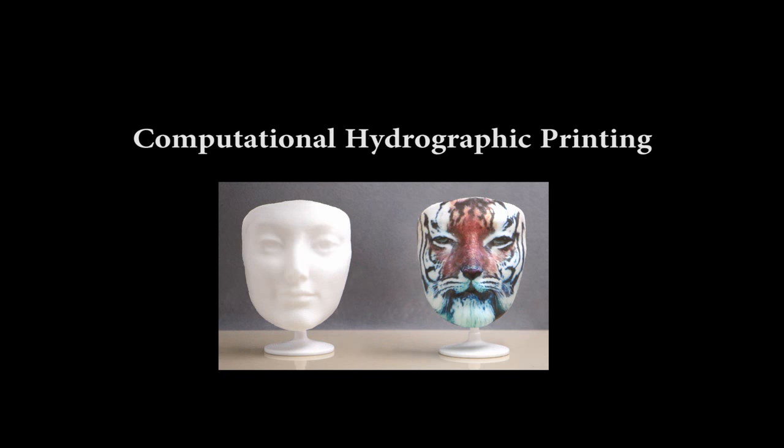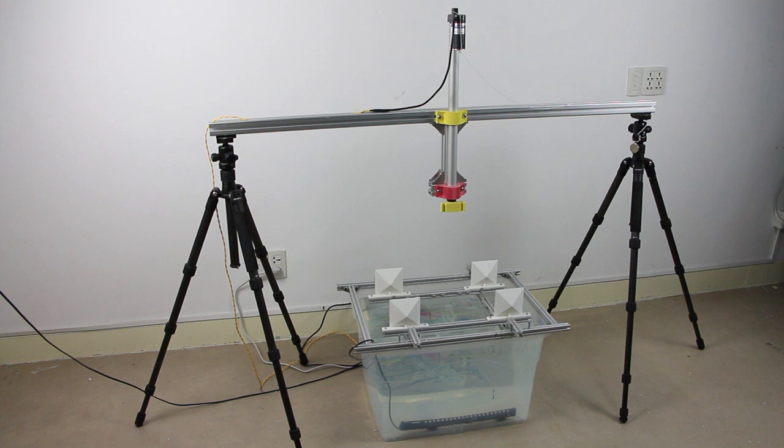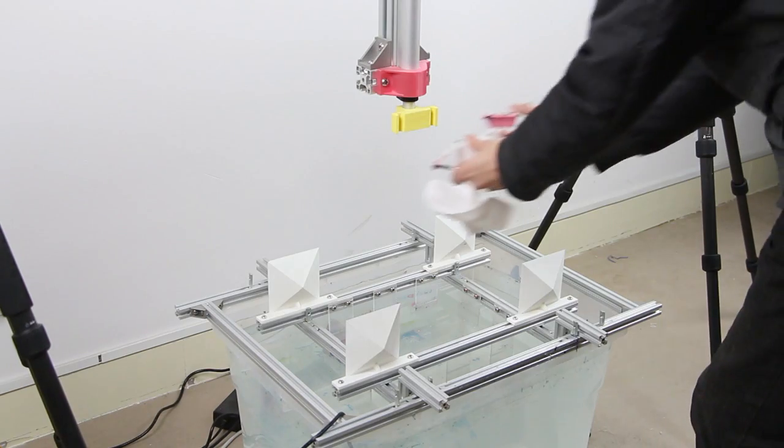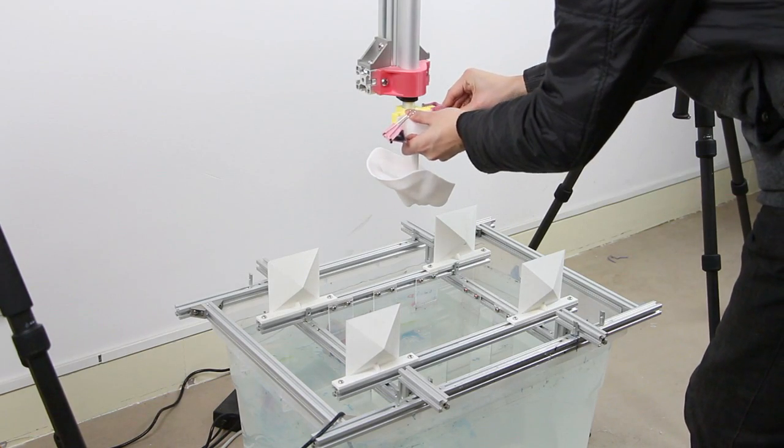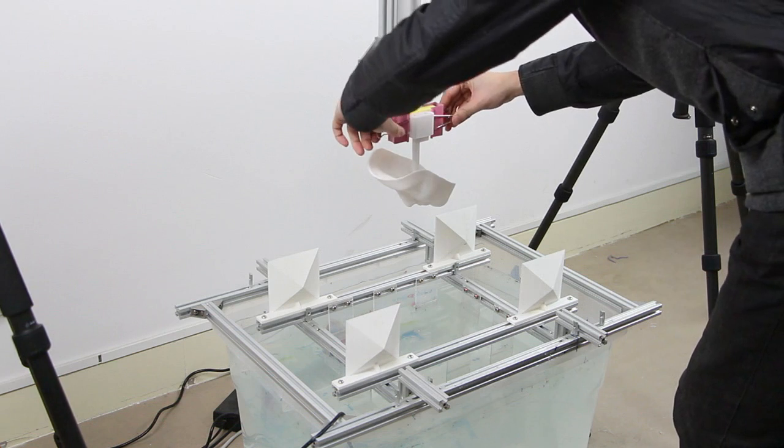Our computational hydrographic printing enables precise alignment of surface textures to complex 3D surfaces. We build a controlled hydrographic printing system using off-the-shelf hardware. In this system, the object to be colored is held by a grip brick connected at one end of a vertically placed aluminum rod.